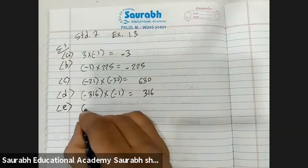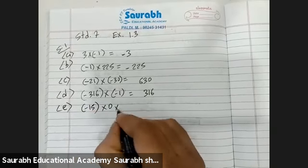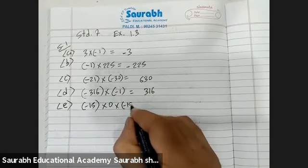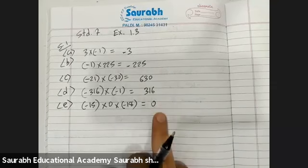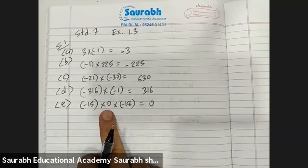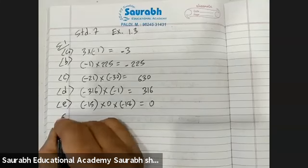E: minus 15 into 0 into minus 18. The answer will be 0 — when there is a 0, the total multiplication will be 0. When you multiply 0 with any number, the answer will be 0.